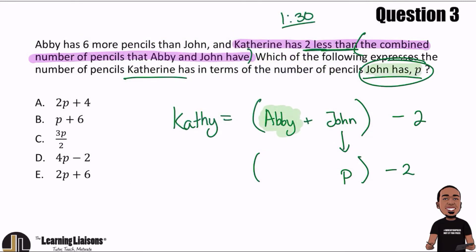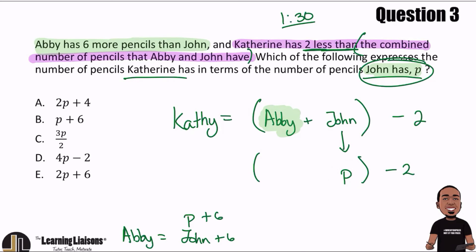Well, Abby is six more than John, so Abby equals John plus six. Since John is p, that's the same as saying p plus six. So Abby over here turns into p plus six, and that's still added to John, which is p.